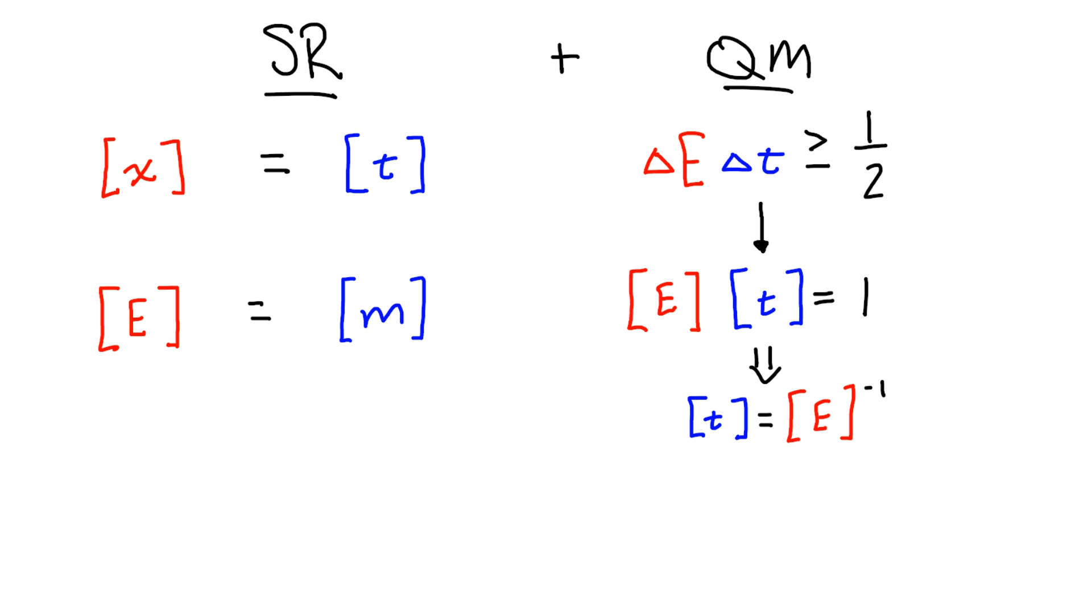As it turns out, when all is said and done in quantum field theory, every quantity can be expressed in the same units to a different power, typically chosen to be in terms of gigaelectron volts or GeV, where 1 GeV is about the rest mass of a proton or neutron. So energy, mass, and momentum are all measured in GeV, while space and time are measured in GeV to the minus 1.